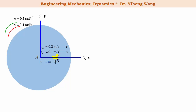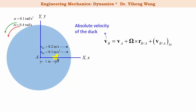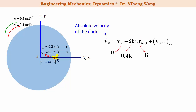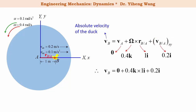Since this problem is straightforward, we use the velocity equation directly. In this equation, V_B is the absolute velocity of the duck. V_A is the absolute linear velocity of point A — in this case it is zero because A is the center of rotation. Omega is the angular velocity of the rotating frame, 0.4k. r_{B/A} is the relative position of B with respect to A, which is 1i. And the last term is the relative linear velocity of the duck, 0.2i. With all this information, we can determine the absolute velocity of the duck.